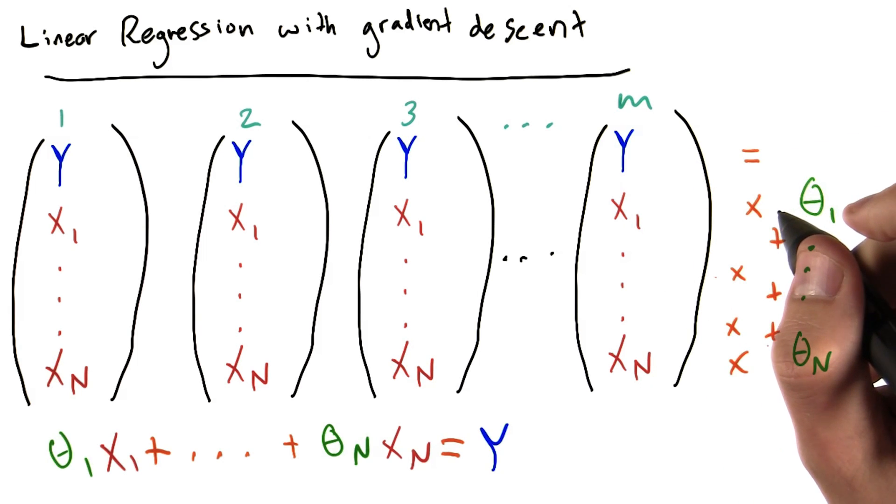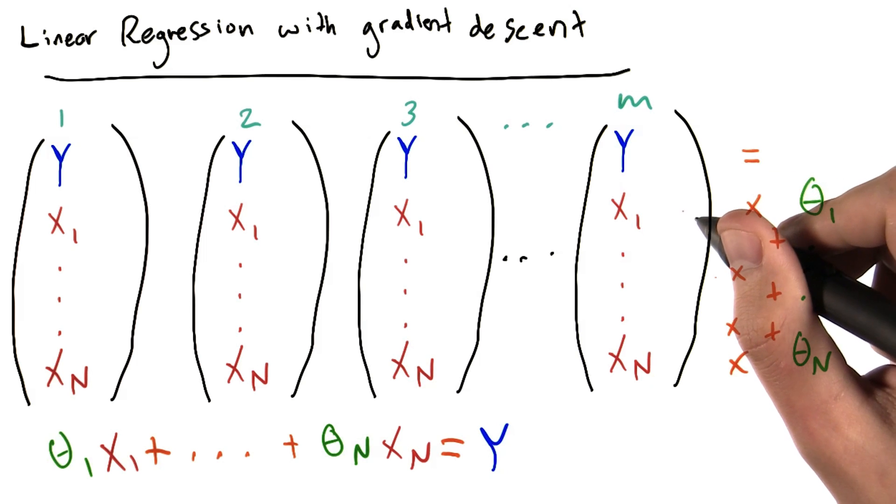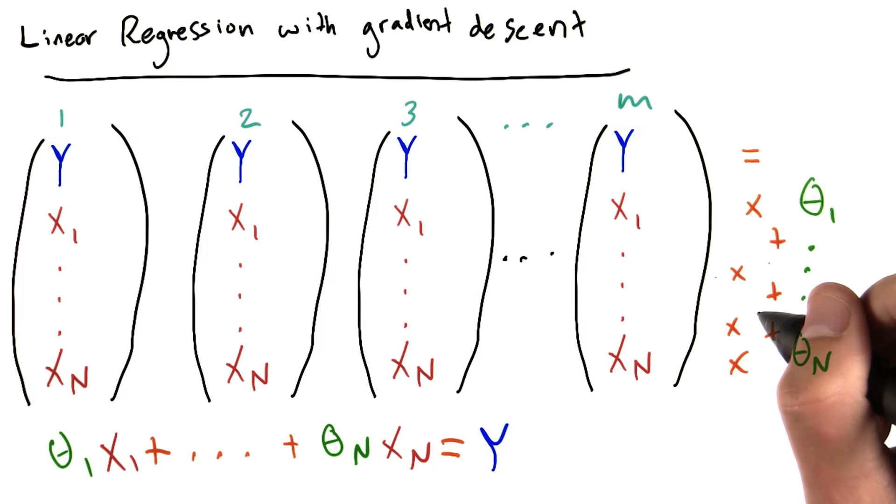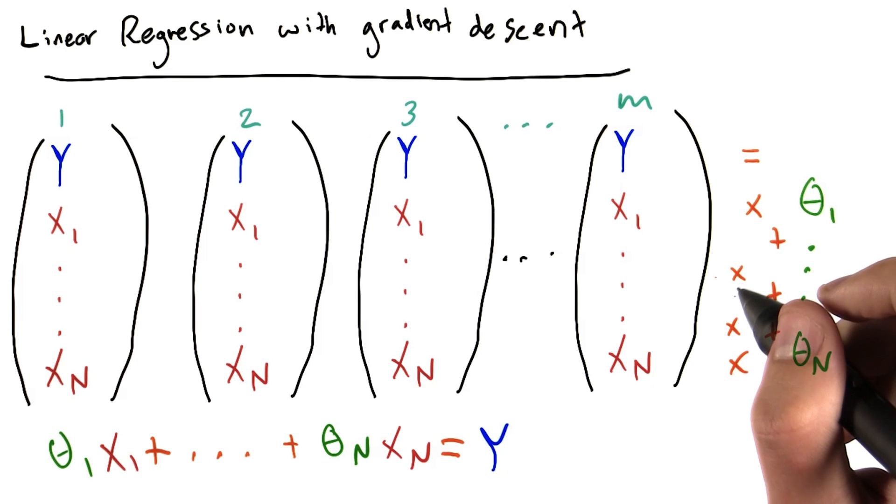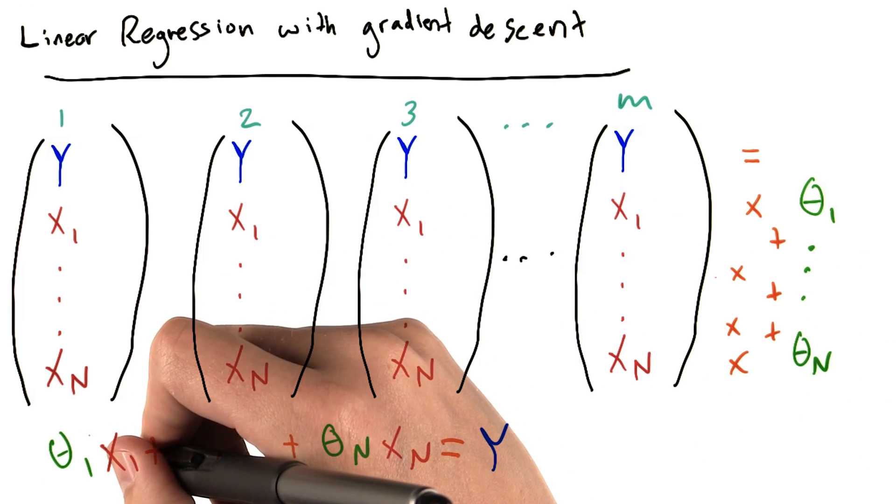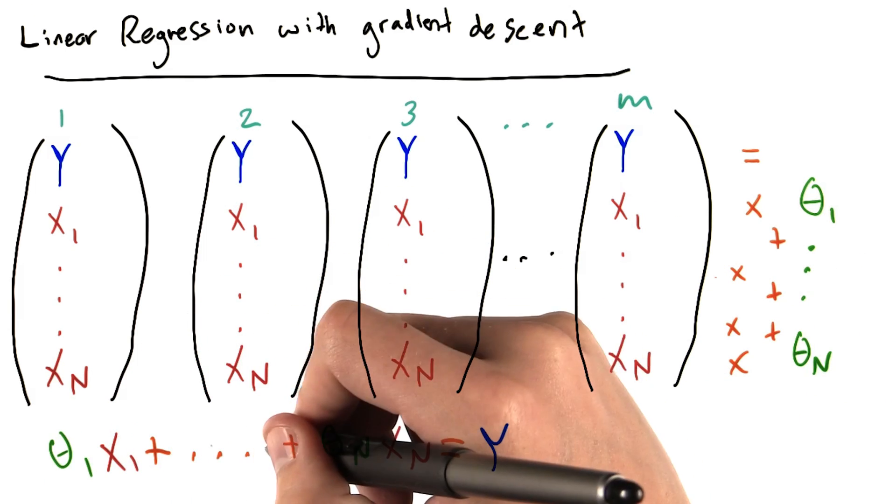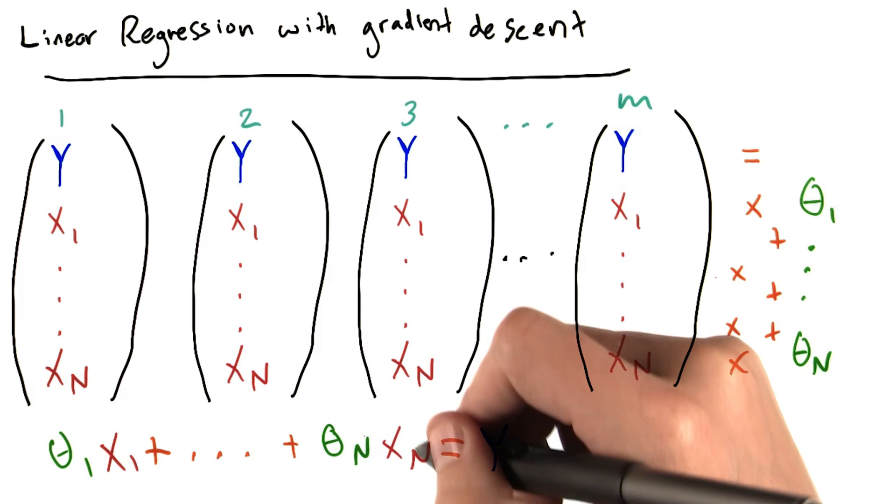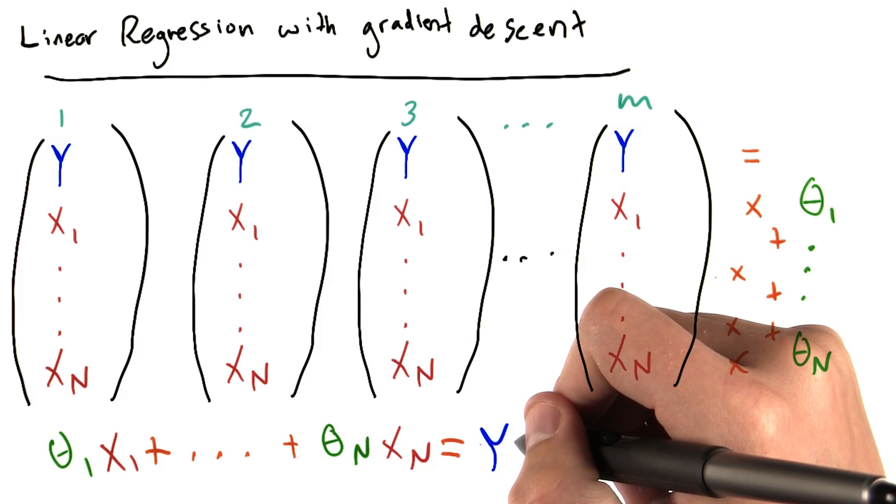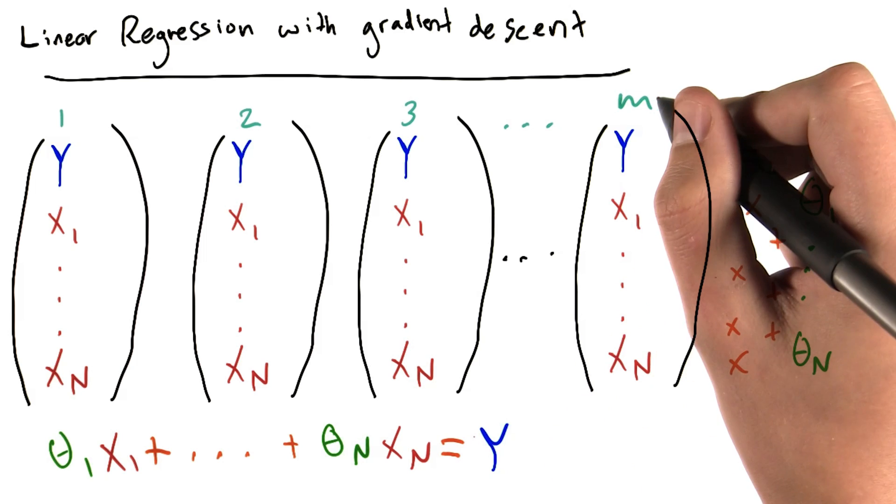This model is built in such a way that we can multiply each x by the corresponding theta and sum them up to get y. So that our final equation will look something like the equation down here: theta 1 times x1 plus theta 2 times x2, all the way up to theta n times xn equals y. And we'd want to be able to predict y for each of our m data points.